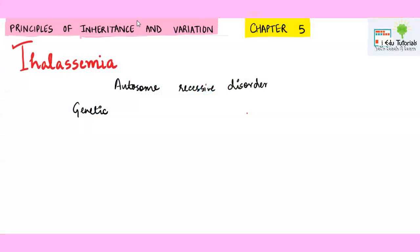Hello learners, in this video we will study thalassemia, which is an example of autosomal recessive disorder. It is a genetic disorder, meaning a child suffers from this disease since birth. These are non-curable diseases because each body cell of the individual is affected.